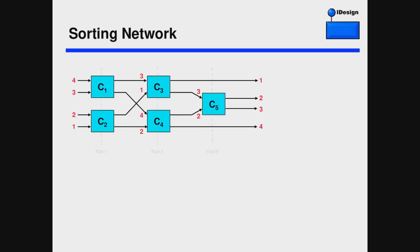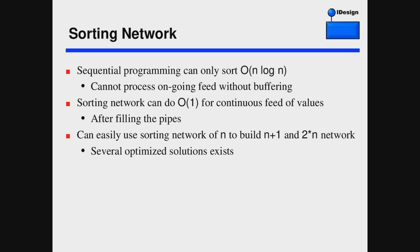With sequential programming we can only sort N numbers in N log N — that's the best case. But with a sorting network you can sort in sublinear or even sublogarithmic time. The real problem with N log N in sequential programming is what if you have an ongoing feed of data? You have to chop it into sequences of N, buffer the rest while sorting — you've got buffering, delays, and you can only do it in chunks. In a sorting network you can sort in order one for a continuous feed of values: after filling the pipes, every tick you get a new batch of sorted numbers.